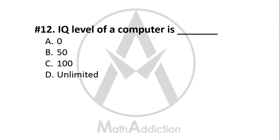Question No. 12: The IQ level of a computer is — what? Option A: 0, Option B: 50, Option C: 100, Option D: Unlimited. The right answer is Option A — 0. Although artificial intelligence is used in computers today, it does not give the computer a true IQ level.